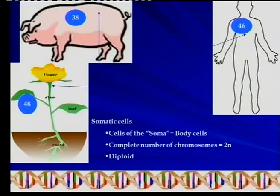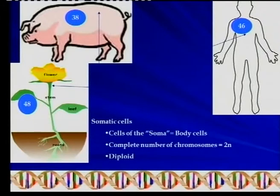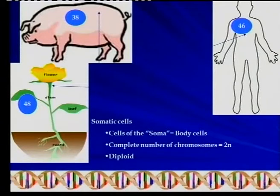As you can see there, all somatic cells — the body cells — contain chromosomes, and there you have three different organisms. Each and every organism has its own chromosome number. We're referring here to the diploid number, because somatic cells contain the diploid number of chromosomes, and we as humans have 46 chromosomes.